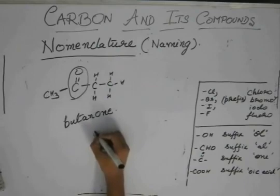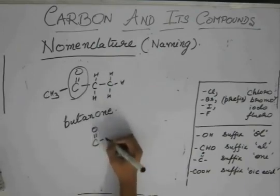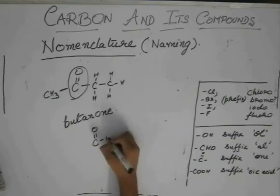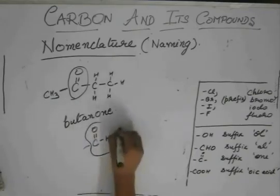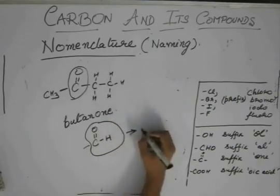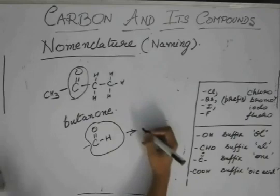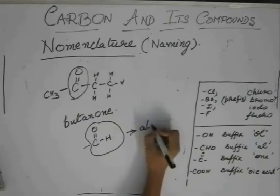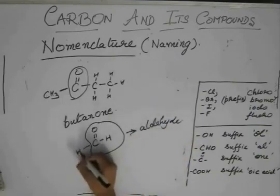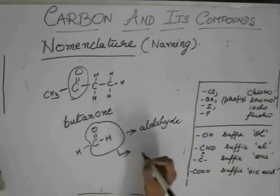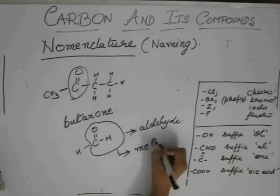You see, if this is H, then it automatically becomes an aldehyde. In a ketone, if one of the arms contains H, then it no longer remains a ketone. It becomes an aldehyde. And if we have another H, this aldehyde is called methanol.